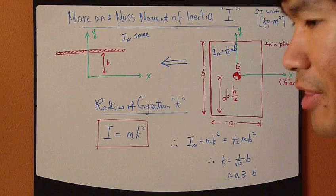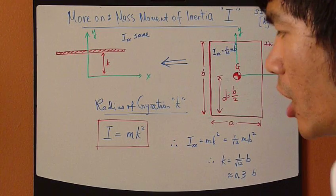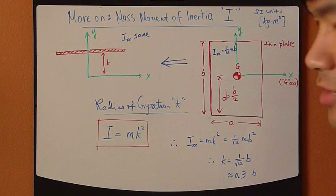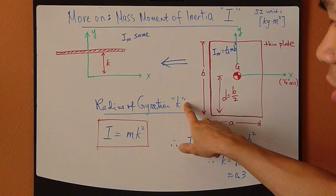Now that's kind of a common thing in handbooks, and sometimes you're given this thing called K, radius of gyration.